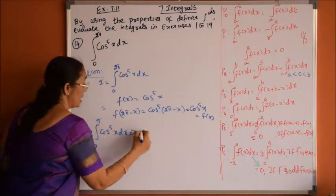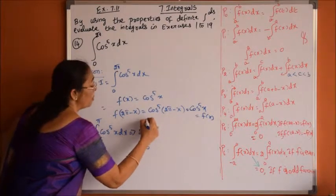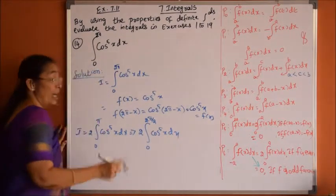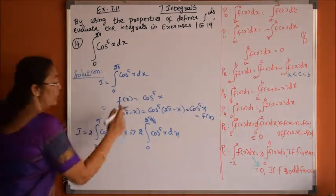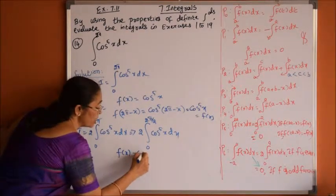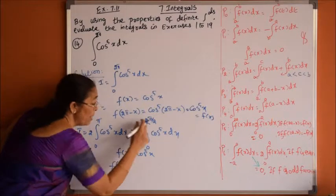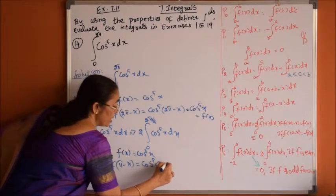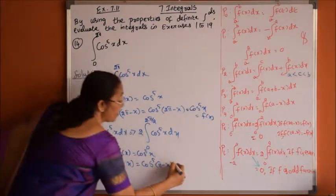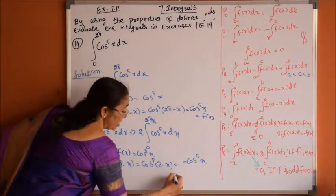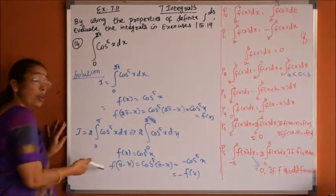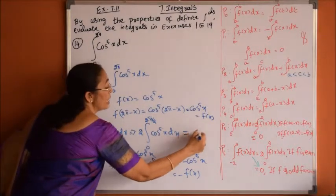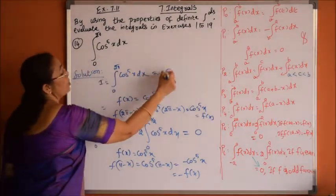Now this can be written as 2 times the integral from 0 to pi, which is 2 into the integral from 0 to pi by 2 of cos power 5x dx. Checking the property again: f of pi minus x equals cos power 5 of pi minus x. Since cos of pi minus x equals minus cos x, this gives minus cos power 5x, which is minus f of x. Therefore f of 2a minus x equals minus f of x, and the answer is 0, so I equals 0.